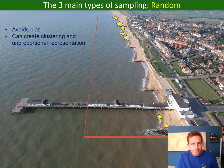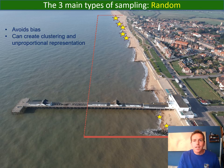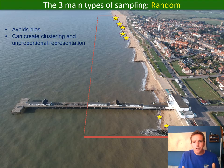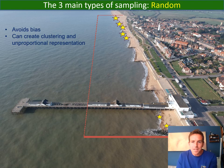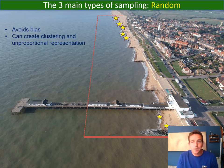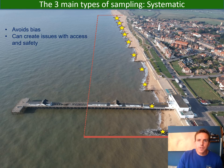Random sampling uses a random number generator or numbers in a hat to select sites, avoiding bias and minimising human influence. However, a problem with random sampling is that you could end up with nine numbers all below 100 — meaning all your sites cluster together within the first 100 metres of the beach. So while it removes human bias, random sampling doesn't guarantee a proportional representation of the whole area.